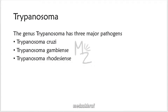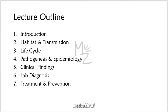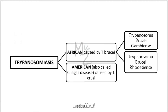Trypanosoma. The genus Trypanosoma has three major pathogens: Trypanosoma brucei gambiense, Trypanosoma brucei rhodesiense. In today's lecture, we'll have a deep dive about the introduction of Trypanosoma brucei gambiense and rhodesiense, their habitat and transmission, life cycle, pathogenesis and epidemiology, clinical findings, lab diagnosis, treatment, and finally the prevention. Trypanosoma is responsible for causing Trypanosomiasis.